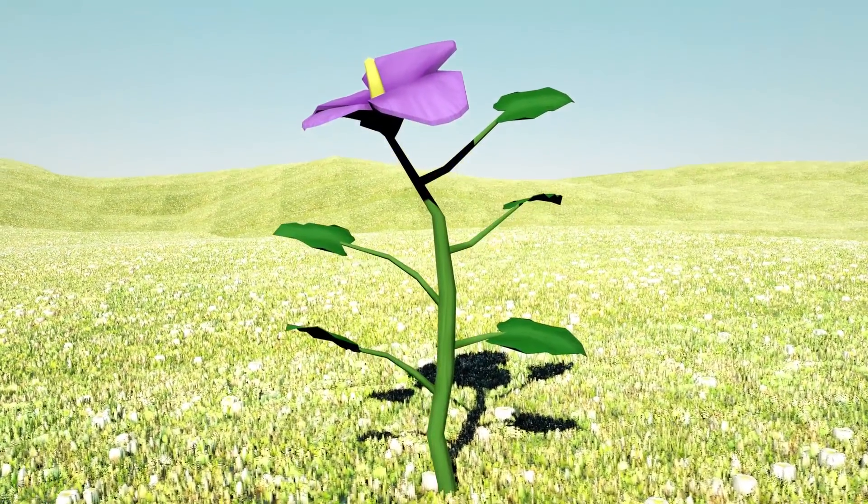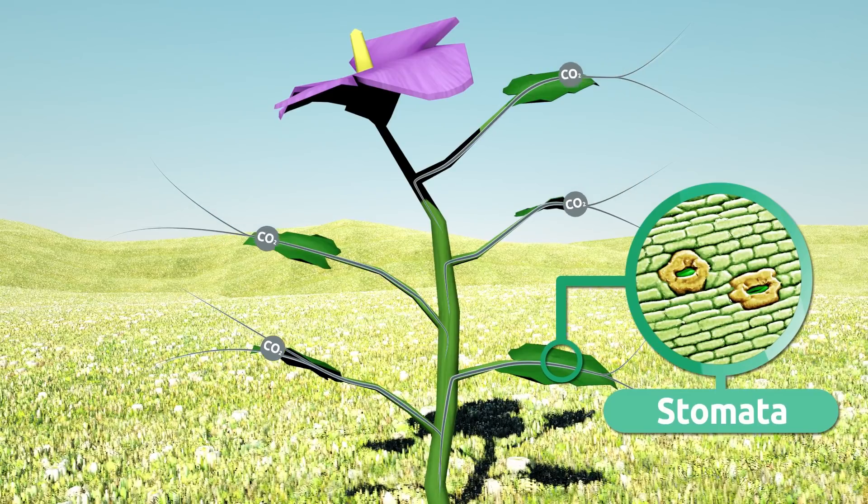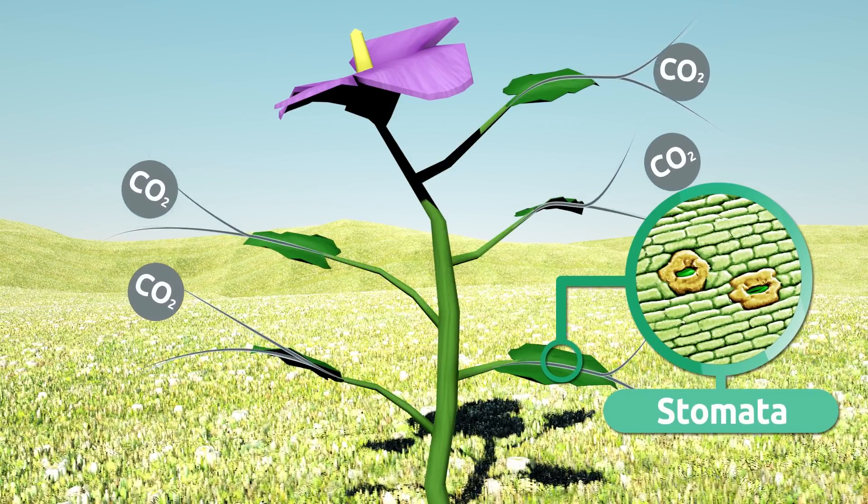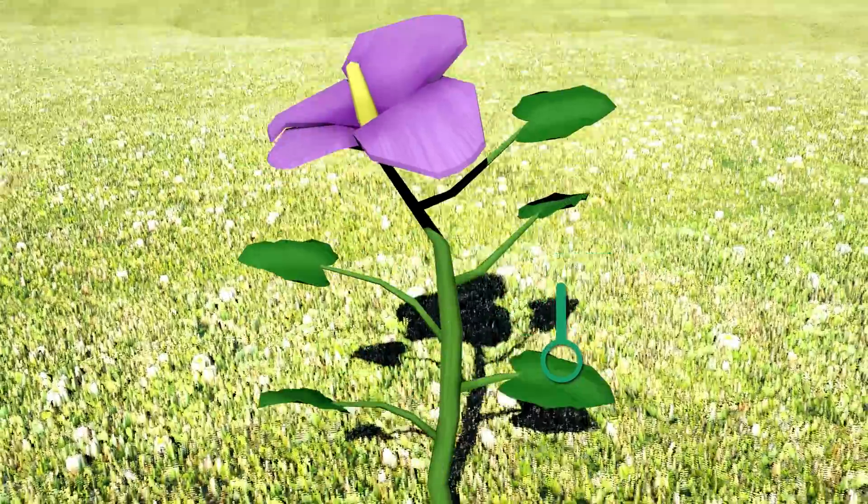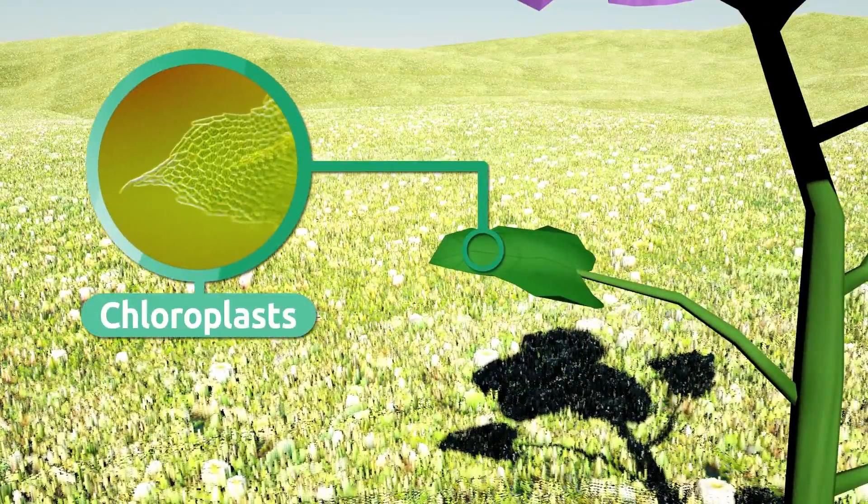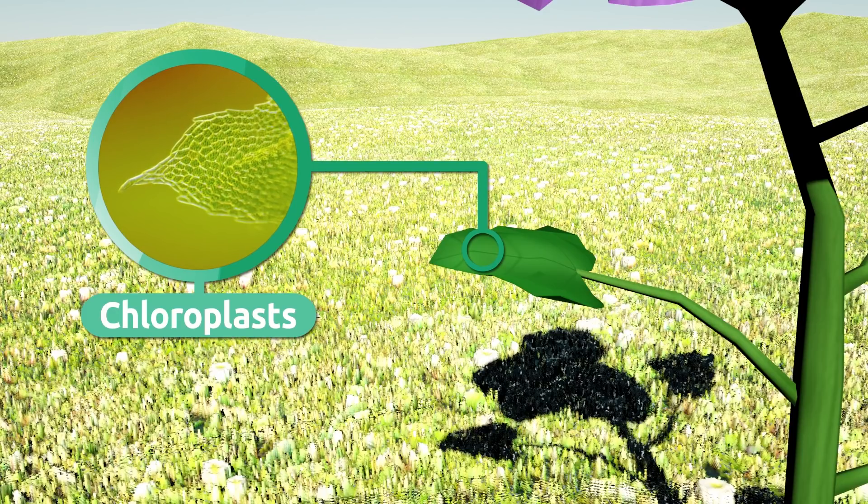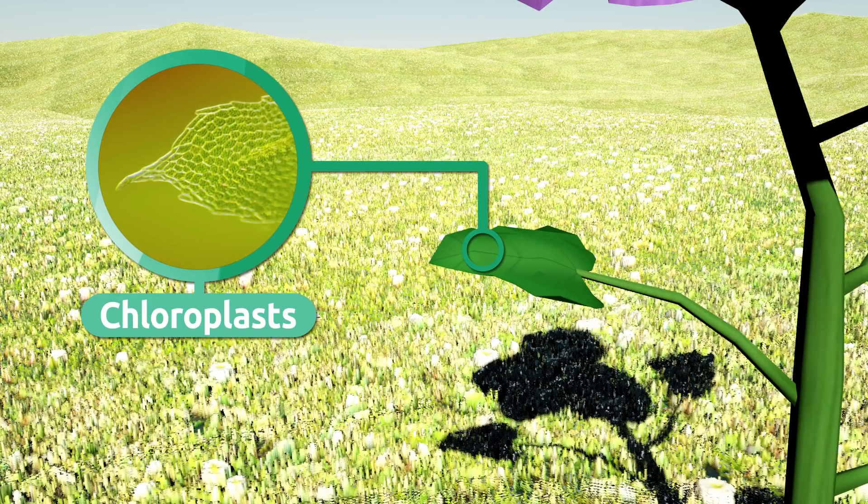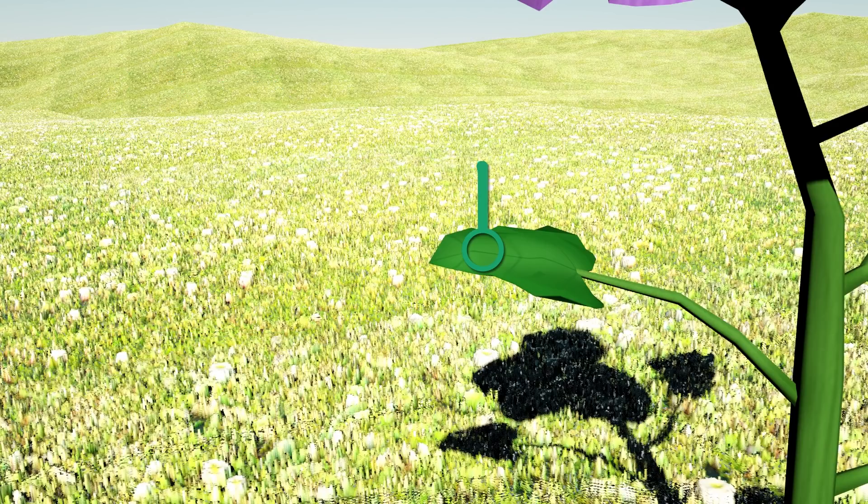Carbon dioxide is absorbed through tiny pores called stomata. And right here, in the leaves, is where photosynthesis actually takes place. Leaf cells are made up by chloroplasts, which contain a pigment called chlorophyll. Chlorophyll gives plants their green color. Chloroplasts capture light energy.